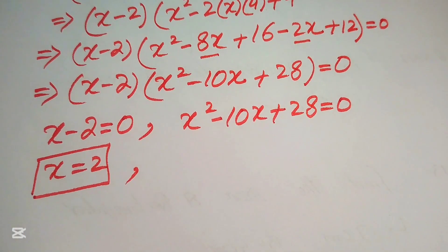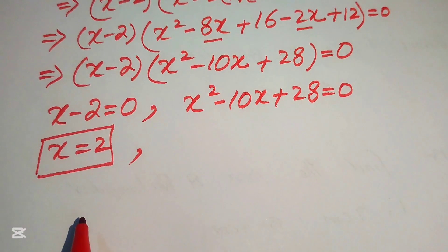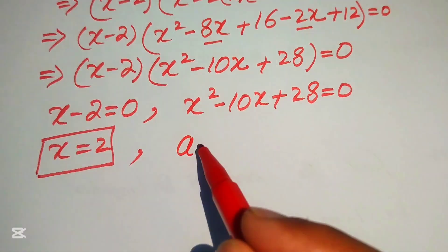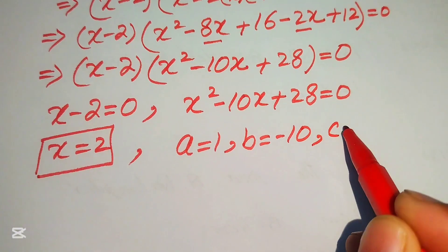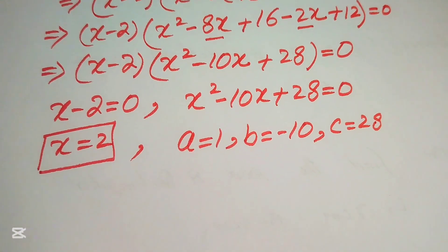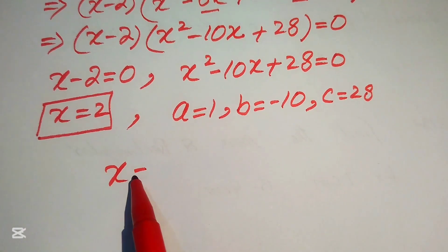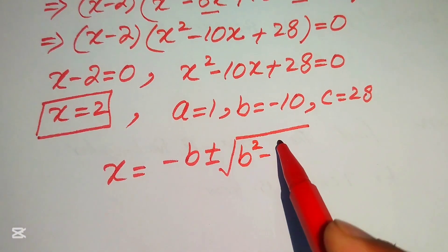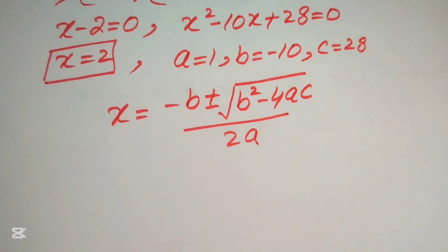To find the other roots we solve the quadratic equation x² - 10x + 28 = 0 using the quadratic formula: x = (-b ± √(b² - 4ac)) / (2a).